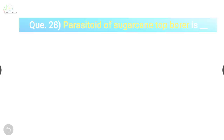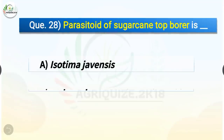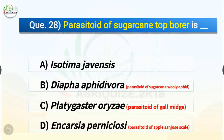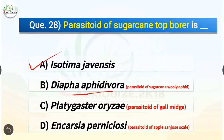Question number 28. The parasitoid of sugarcane top borer is which? The options are Isotima javanensis, Dipha aphidivora, Platygaster oryzae, or Encarsia perniciosae. The correct answer is option A, Isotima javanensis. The parasitoid of sugarcane woolly aphid is Dipha aphidivora. The parasitoid of gall midge is Platygaster oryzae, and the parasitoid of apple San Jose scale is Encarsia perniciosae.